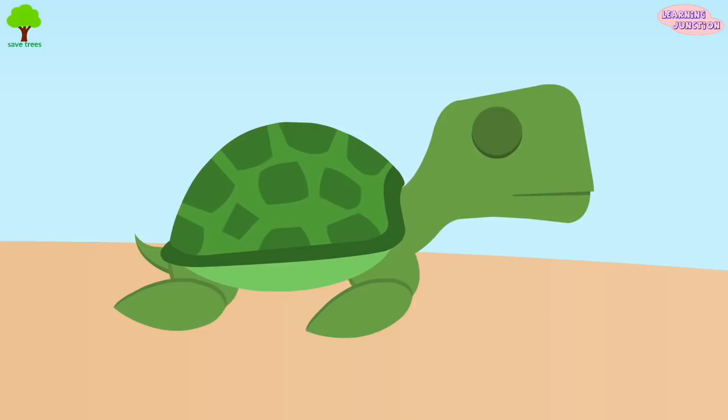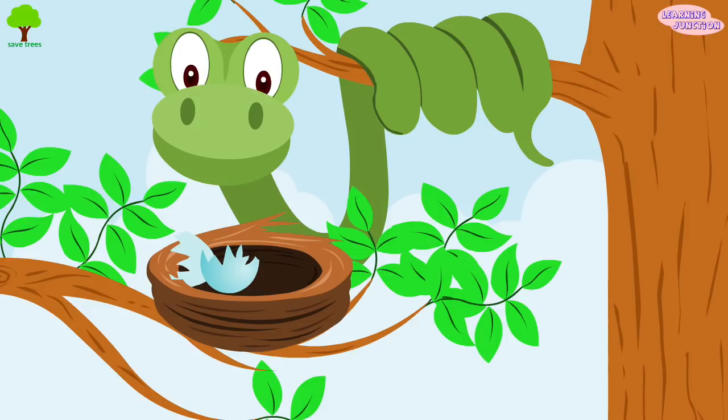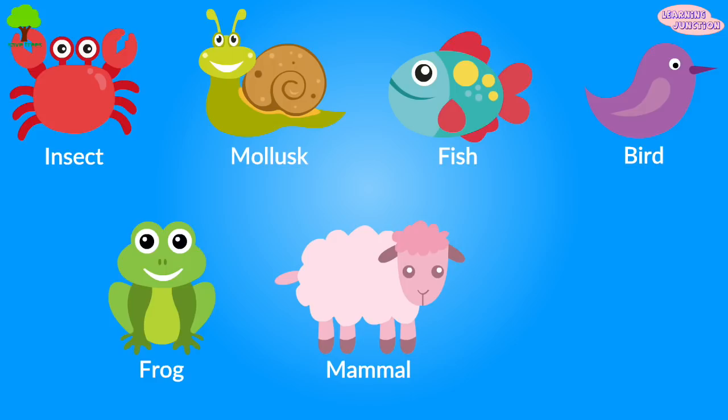Reptiles crawl or move on their bellies or on small short legs. Most reptiles are carnivorous and they swallow their prey whole. They mostly eat insects, mollusks, fishes, birds, frogs, mammals, or sometimes other reptiles.